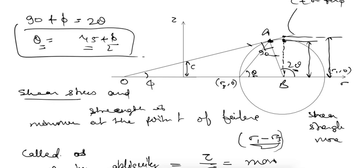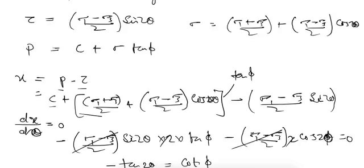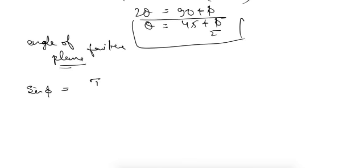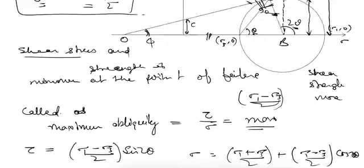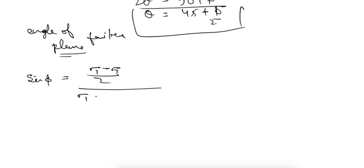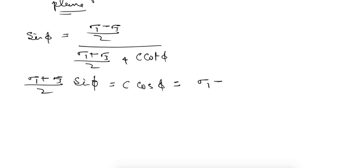One more relation is obtained from triangle OAB. Writing sin φ: since the angle at the tangent is 90 degrees, sin φ = perpendicular/hypotenuse = [(σ1 − σ3)/2] / [(σ1 + σ3)/2 + c·cot φ]. Multiplying through: (σ1 + σ3)/2 · sin φ + c·cos φ = (σ1 − σ3)/2.